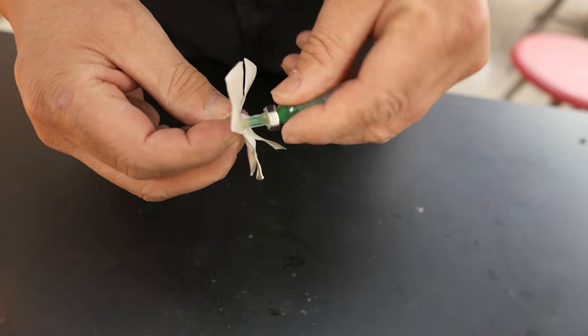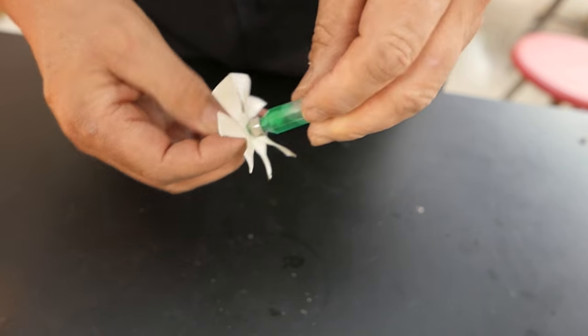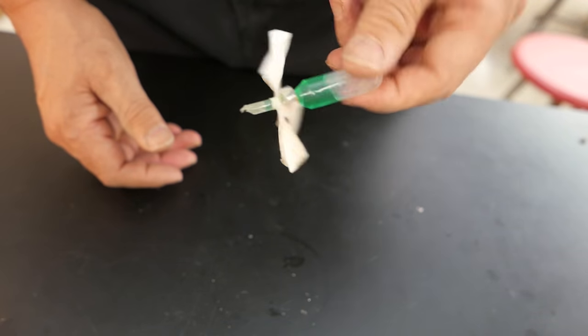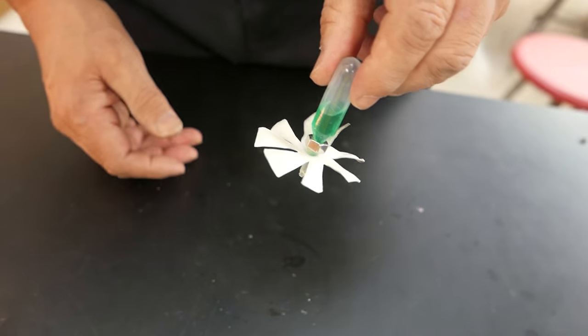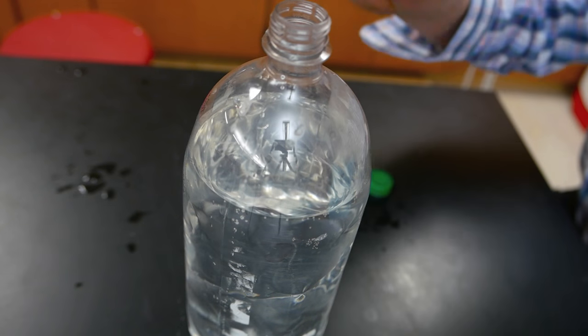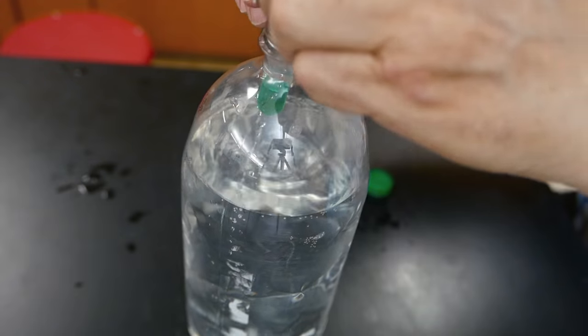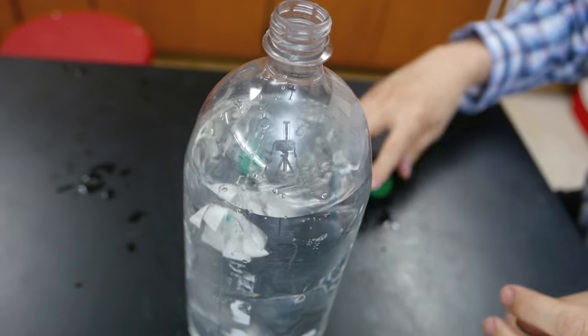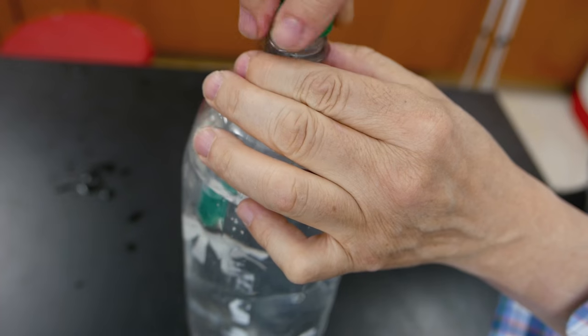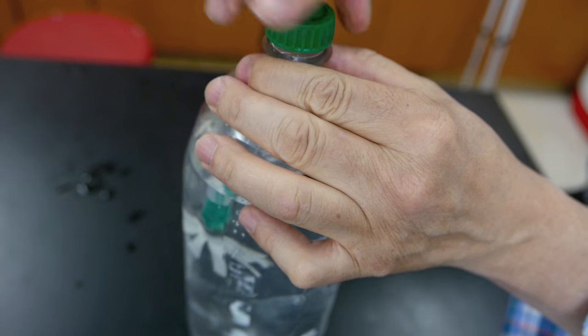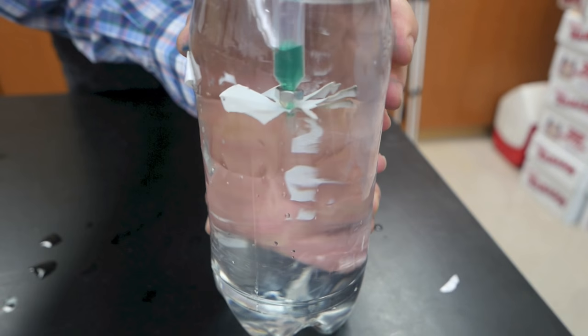After I've twisted all the blades, I would then put it on the diver. It's held there by friction. That's what it looks like. Let's put it in the bottle. There we go. I'll cap it, and we'll give it a squeeze.